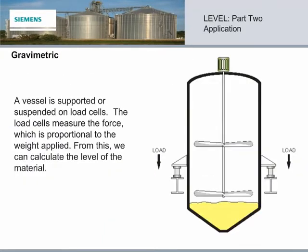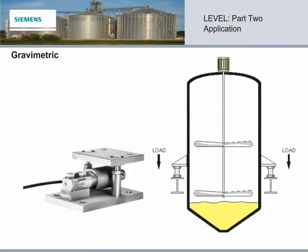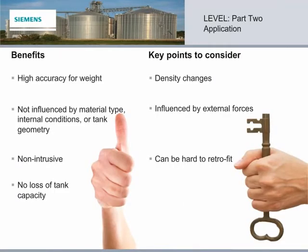Gravimetric level measurement is when the vessel is supported or suspended on load cells which measure the force. It is proportional to the weight applied from the vessel and its content. The density of the material must be known to calculate the level accurately. Gravimetric level measurement is very accurate when the density of the material is stable. But if the density does not remain constant, the level will vary with the weight reading. This reading, however, is not influenced by material type itself, internal conditions, or any tank geometry. It's non-intrusive, and there's no loss of tank capacity.